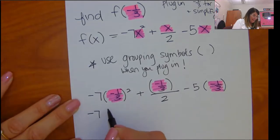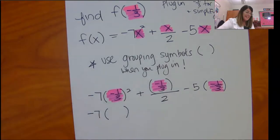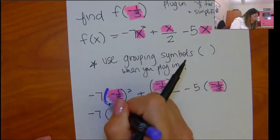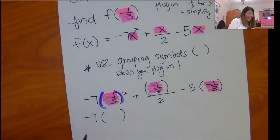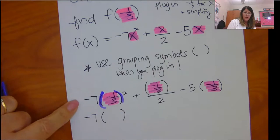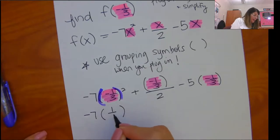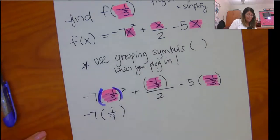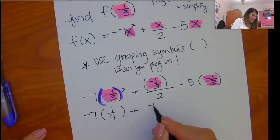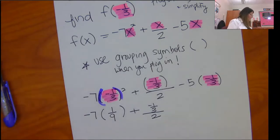What I have here is negative 7. Now, if I didn't use these grouping symbols, I might not realize this inside here, when I square it, it is going to become positive 1 ninth. Plus, I have got negative 1 third divided by 2. And then I look at this one.